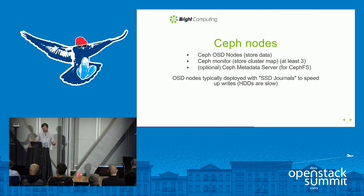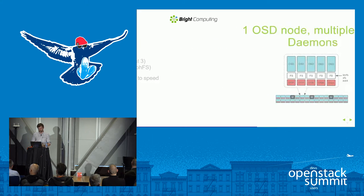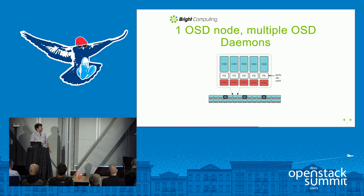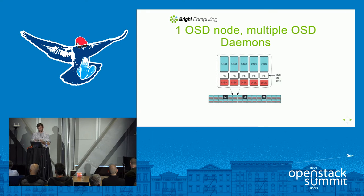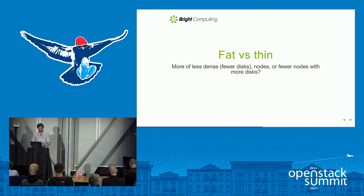When it comes to types of Ceph nodes, we have OSD nodes, monitor nodes, and if running CephFS also metadata server nodes. During this talk we're focusing purely on OSD nodes — the nodes that actually store Ceph data. The key question is: how many OSDs do you want? Typically you deploy one OSD daemon managing a single spinning drive or SSD, each storing data on a specific disk.